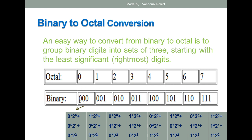The next binary set is 0 0 1. Start from LSB: 1 × 2⁰ + 0 × 2¹ + 0 × 2² = 1. So the set 001 is equivalent to octal 1.